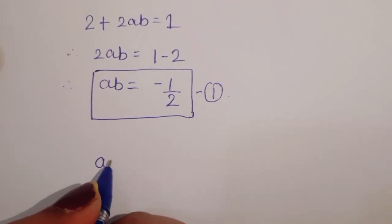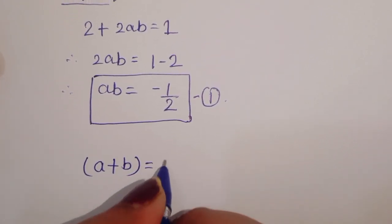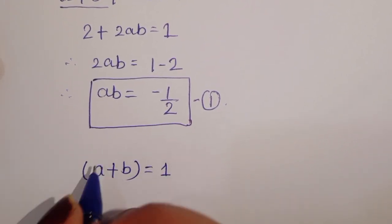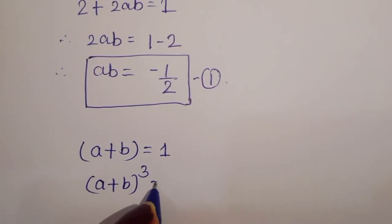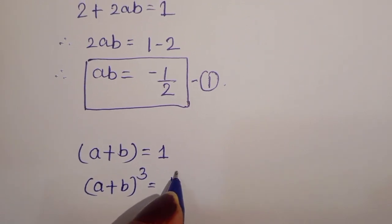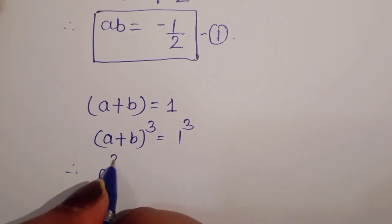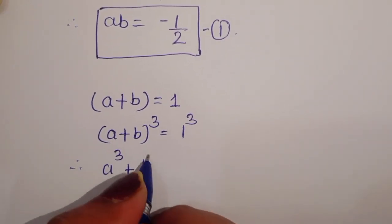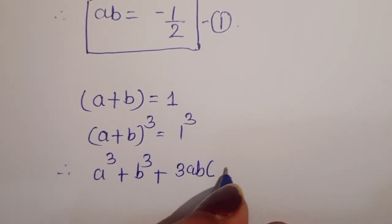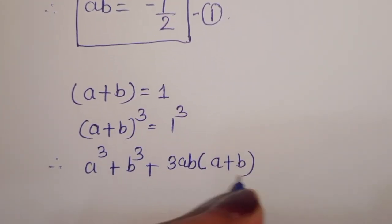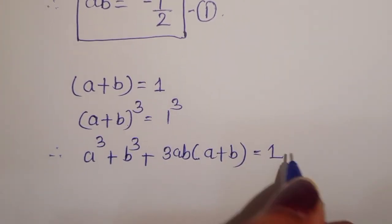Now, a plus b is equal to 1 is given. We can cube both sides: (a+b)³ = 1³, which gives a cube plus b cube plus 3ab(a plus b) is equal to 1.